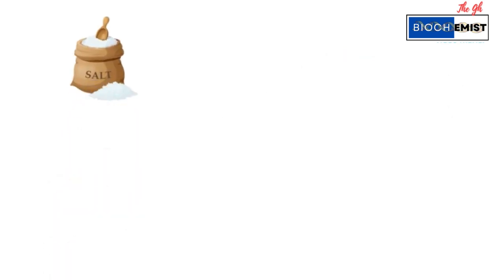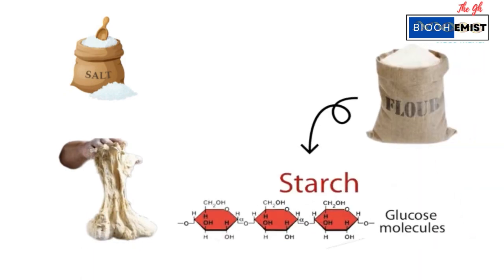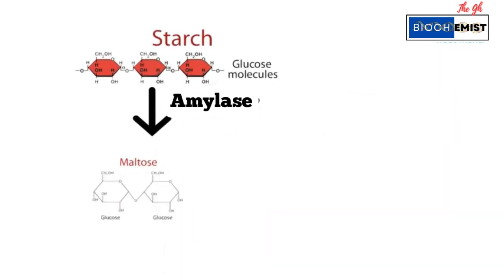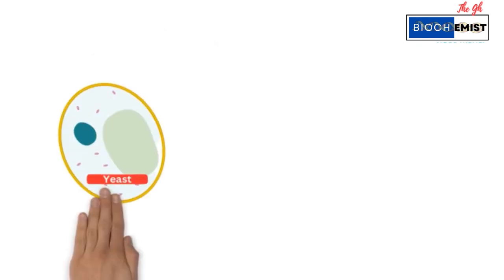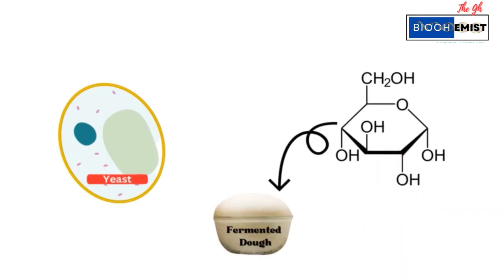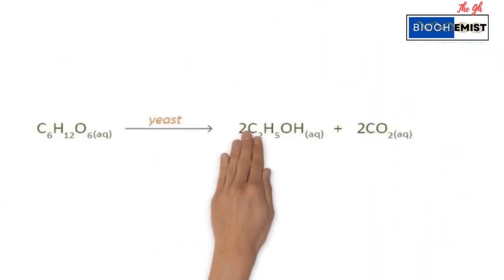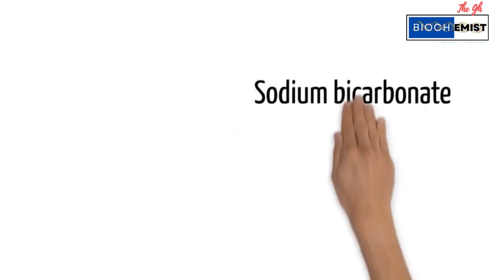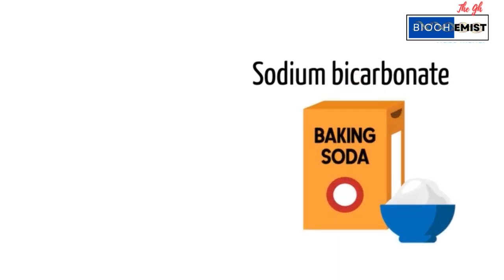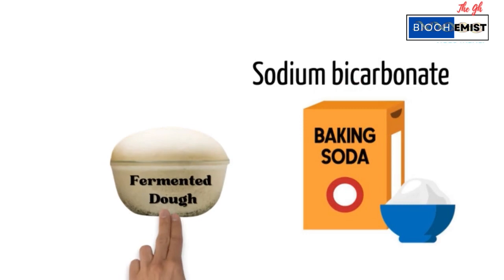Salt also strengthens the gluten network, making the dough more elastic. The flour also contains starch, which is a long chain of glucose molecules. The enzyme amylase breaks down the starch to maltose, which is then converted to glucose with the help of the enzyme maltase. Yeast, a crucial player in this process, uses these glucose molecules in fermentation — converting glucose to carbon dioxide and ethanol. These end products enlarge the dough, giving it a preformed shape. Sodium bicarbonate, commonly known as baking soda, also produces extra carbon dioxide, helping the dough to rise.